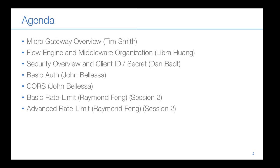I'll go through at a high level and talk to the Micro Gateway and its components. Then Libra Huang is going to take us through the design of the flow engine and the Micro Gateway in general, including all the different middleware components. Then Dan Batt will take us through the security overview and client ID and client secret validation. John Balesa will cover basic auth and CORS.